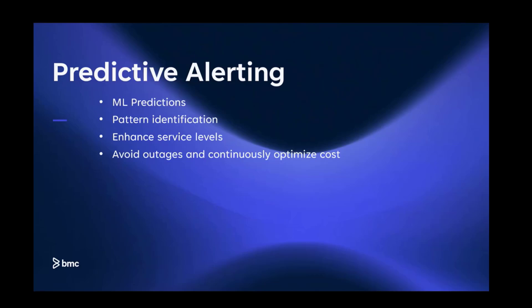The last feature is prediction. For any AIOps solution, prediction is the most important thing, and we have that feature in our AIOps solution as well. It uses ML algorithms to spot problems in data and warns the operators or IT team before the problem actually occurs. It identifies patterns based on historical data and says, okay, after 12 hours you are going to have a problem. An event is created in BHOM with the class 'prediction' so that everybody knows something is going to happen in the next 12 hours.